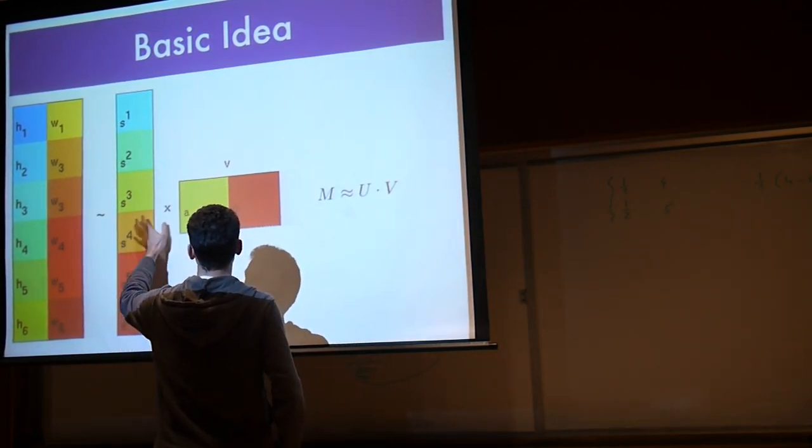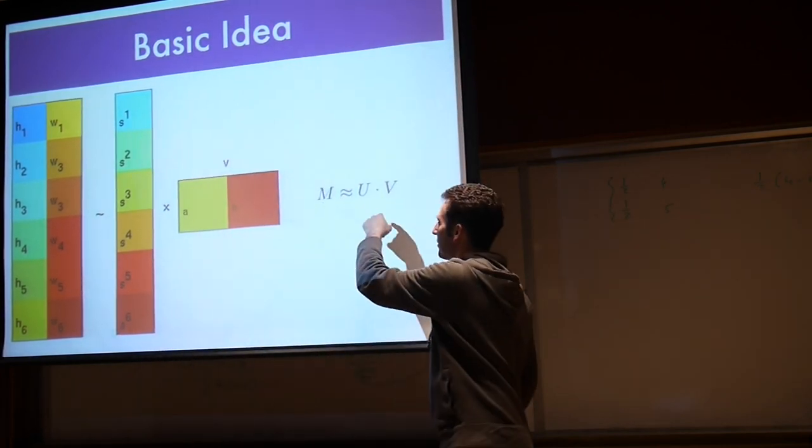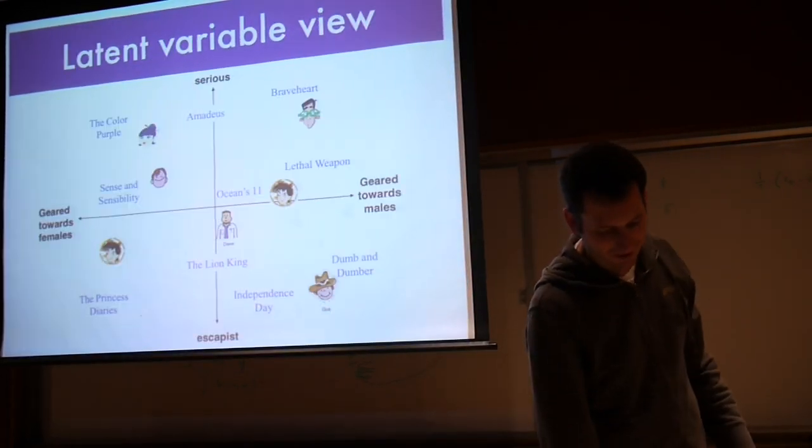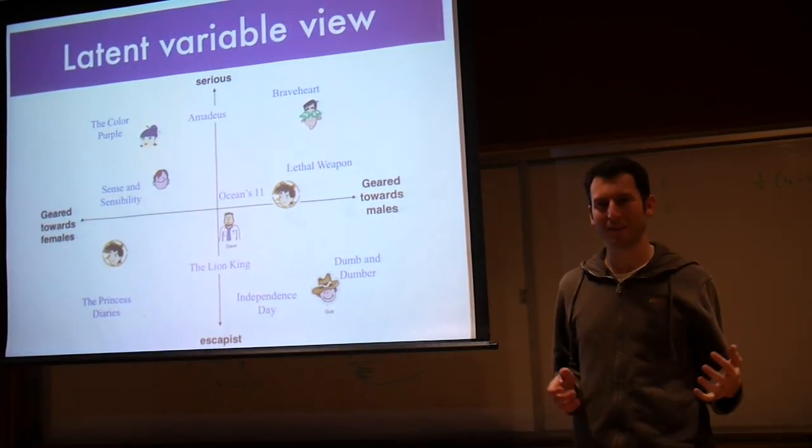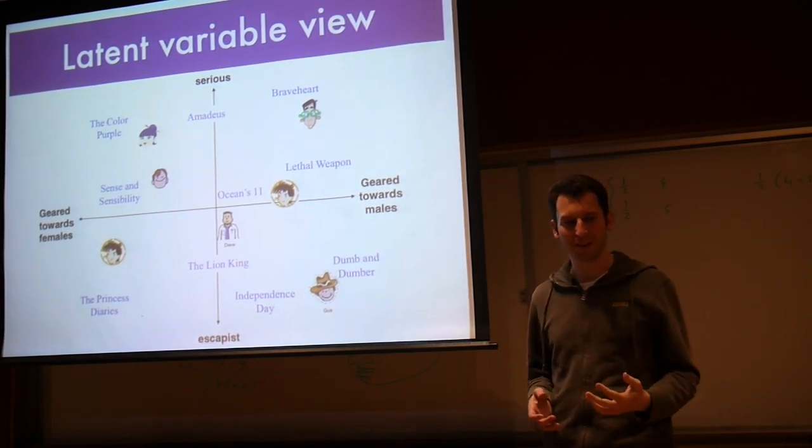We just want to approximate that with a low rank matrix, matrix M equals U times V. We've probably seen that before - any of us who's done a numerical linear algebra class would have probably seen something like an SVD, singular value decomposition.